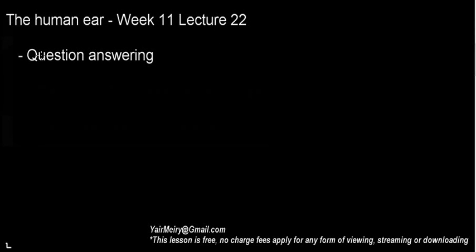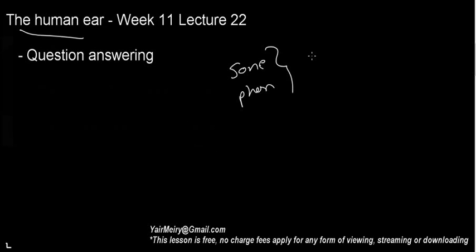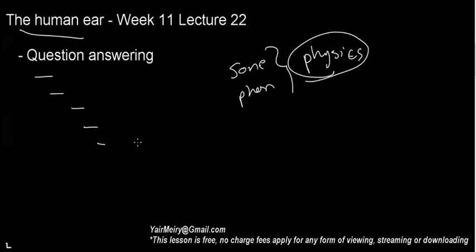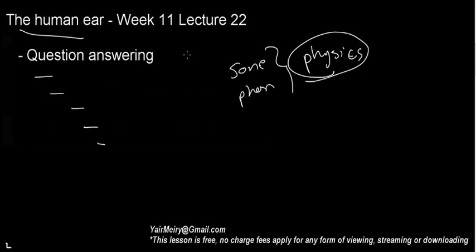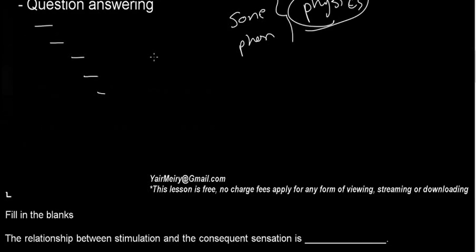I decided to make yet another video on the topic of the human ear, just because there's so much confusion around the physical quantities of the phon scale, what do I need to know, what do they mean by different relationships. This is a lot of physics, so I don't really expect it to be very intuitive. These questions are based on things I've seen in past papers and some information from the Minimals.